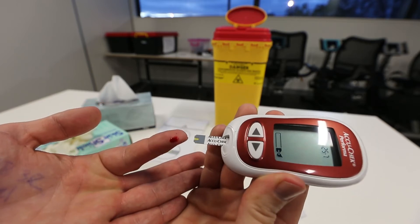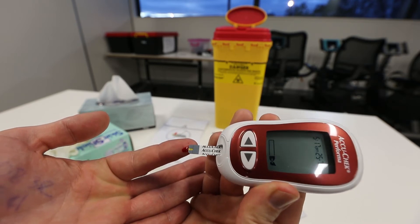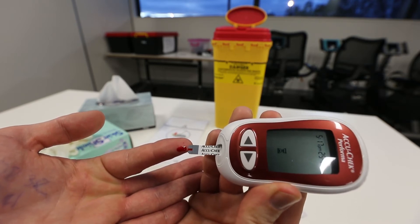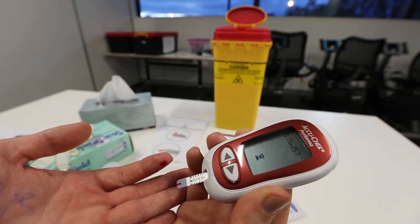When sufficient blood has been drawn into the test area, the unit will beep, and in 5 or so seconds the blood glucose reading will be shown on the screen.